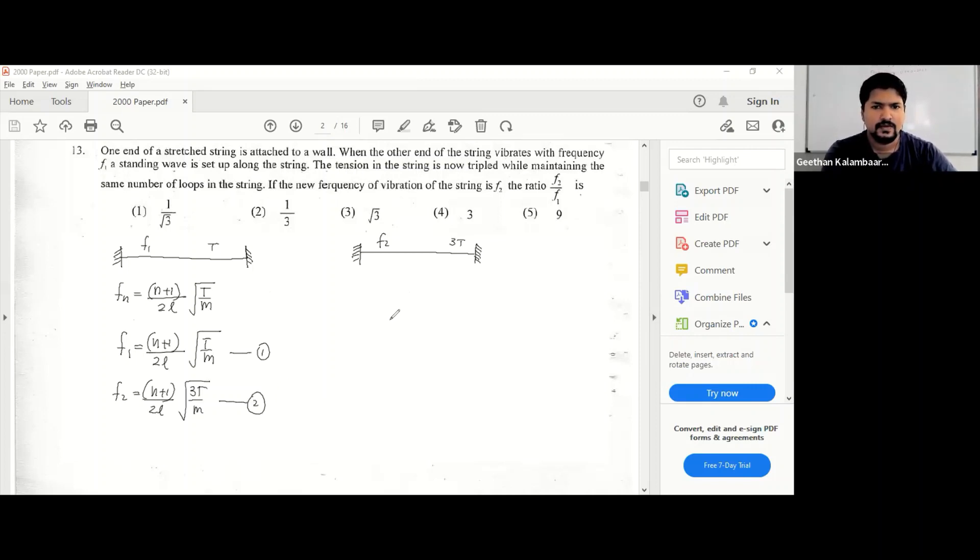Right, so now you have to divide the two equations. Just get f2 over f1, so 2 divided by 1. Simply get root 3. Everything else is getting cancelled, so root 3 is the answer.